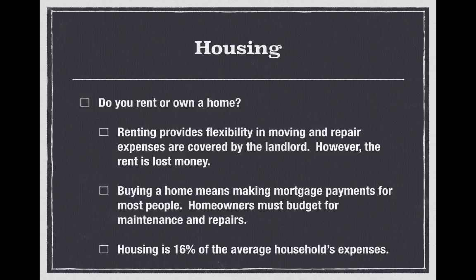Buying a home means making mortgage payments for most people, unless you have the money to pay cash. You're going to have to go to a bank and take out a mortgage — a large loan paid off over a certain period of time at an interest rate depending on your credit worthiness. Most people go for a standard 30-year mortgage at a fixed interest rate that stays the same regardless of what interest rates do in the market. Homeowners must budget for maintenance and repairs — you've got to either learn to fix problems or pay someone to fix them. Owning a home can be very expensive. Housing is 16% of the average household's expenses.